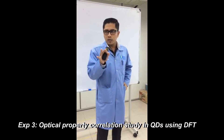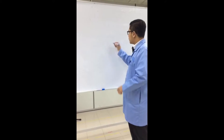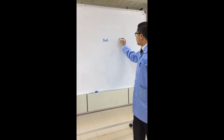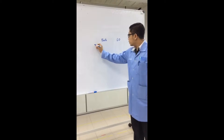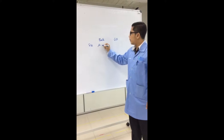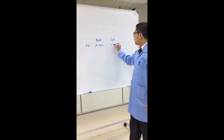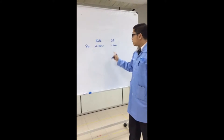Some of you already know what quantum dots are — I mentioned them during the Solar Cell class last semester. The difference between quantum dots and bulk semiconducting material: bulk is in the micrometer range, and quantum dots are in the 1 to 10 nanometer range. This is very small.